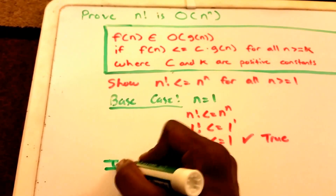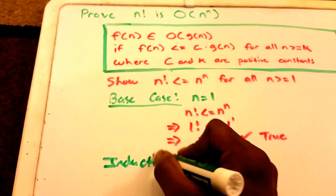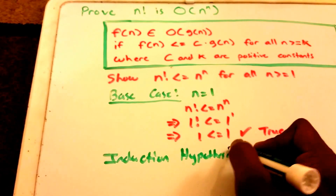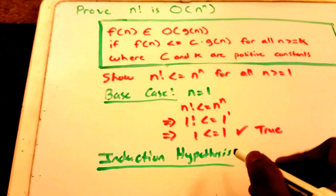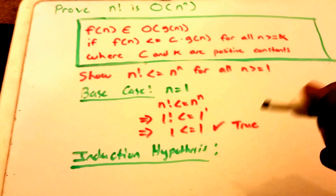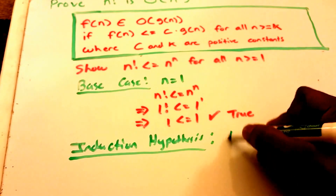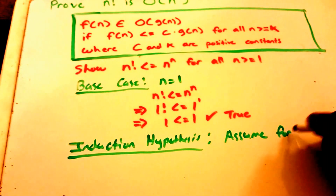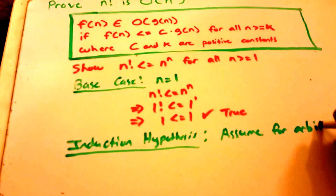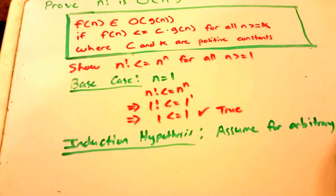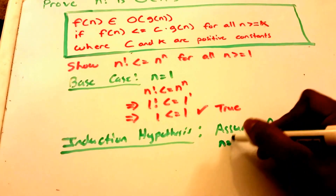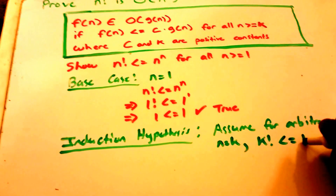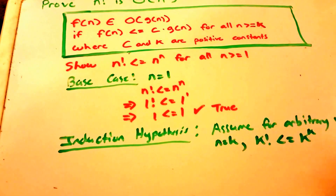Next, we do our induction hypothesis. For our induction hypothesis, we assume for some arbitrary value n equals k that k factorial is less than or equal to k to the power of k.